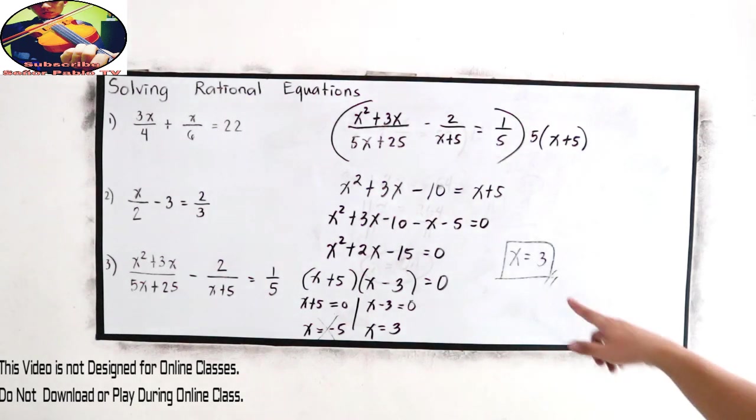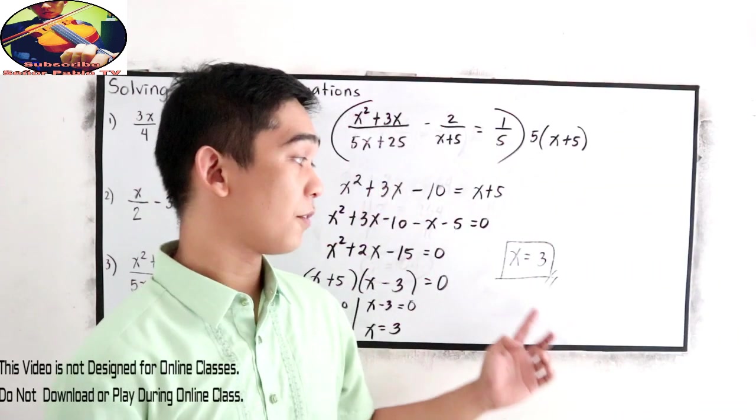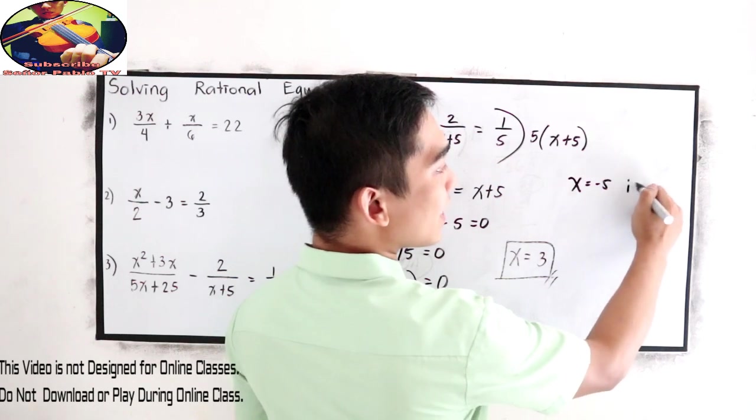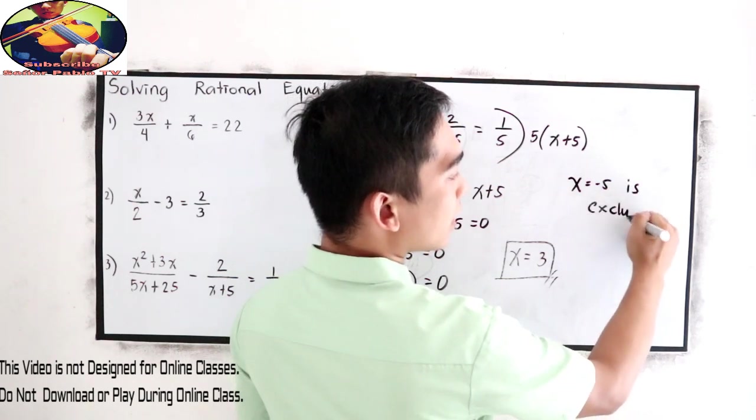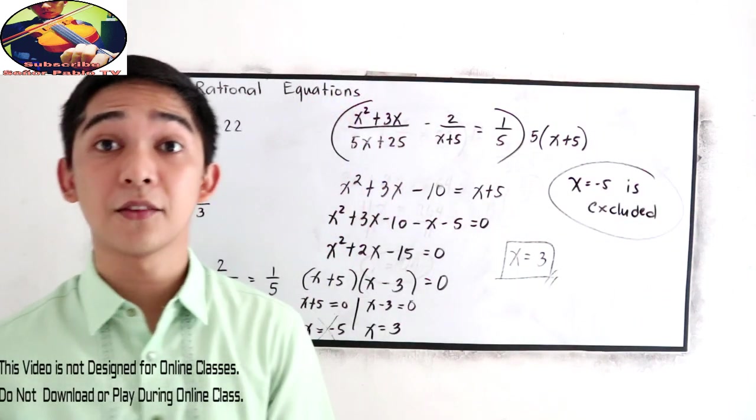So the only solution in number 3 is positive 3. Negative 5 is excluded. That is our restricted value.